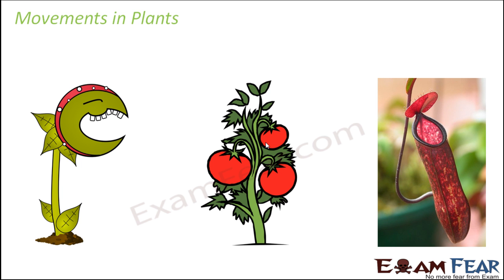In the touch-me-not plant, as soon as you touch the leaves, the leaves tend to close — as if they are feeling shy. The leaves tend to move and close. That's an example of movement in a plant.